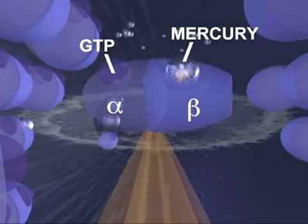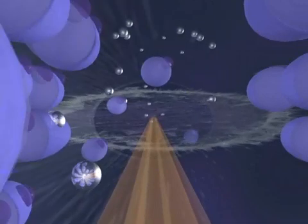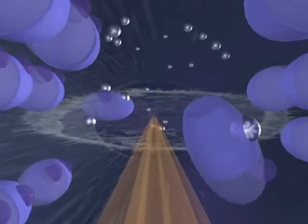Since bound GTP normally provides the energy which allows tubulin molecules to attach to one another, mercury ions bound to these sites prevent tubulin proteins from linking together.